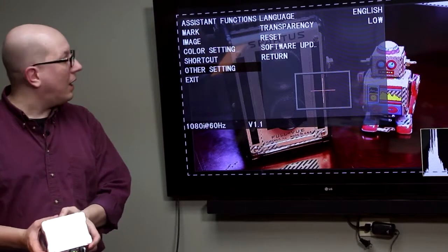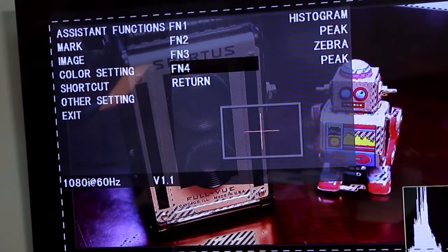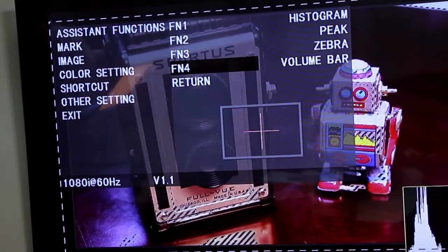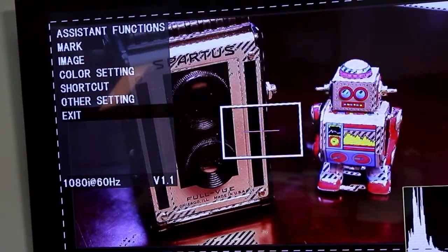So let's actually set up Function 4 to be the VU meter. You page through, there it is, volume bar, hit return, exit,